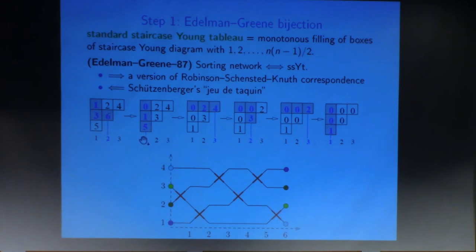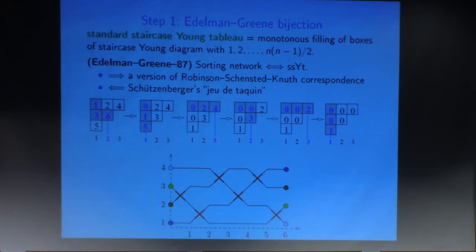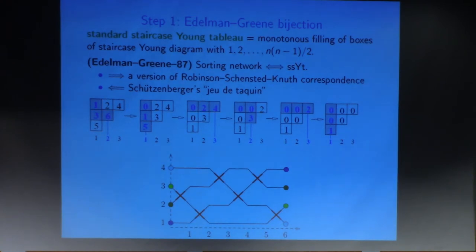You again locate the largest entry — that's four, in column three — giving the next swap, then three, then three again, then one for the final swap. What Edelman and Green proved is that this procedure indeed gives a bijection with sorting networks. A priori it's not even clear that you get a sorting network — why should it be the shortest path connecting the identity with the reverse permutation? But with some combinatorics you can prove that that's true. So this first step reduces our problem of studying random sorting networks to studying random staircase Young Tableaux.